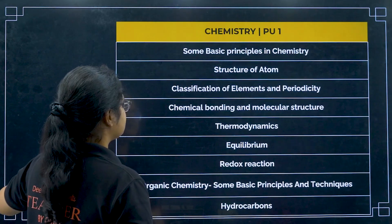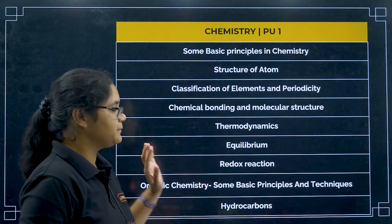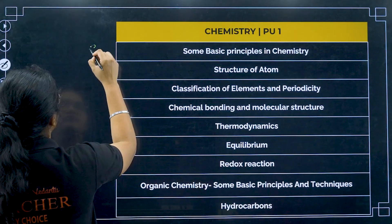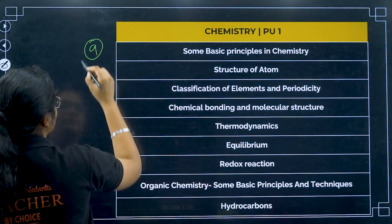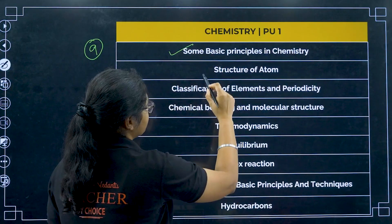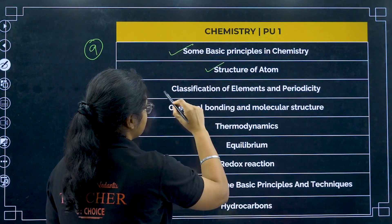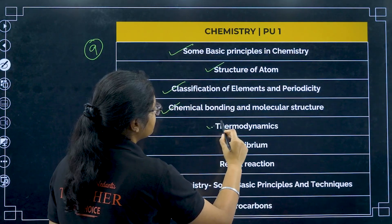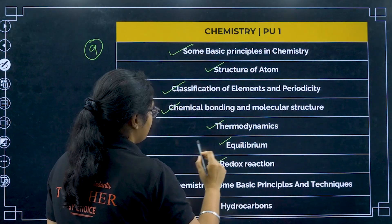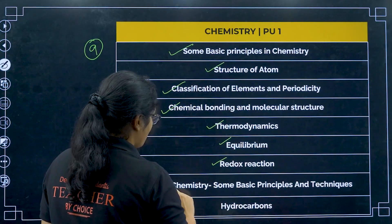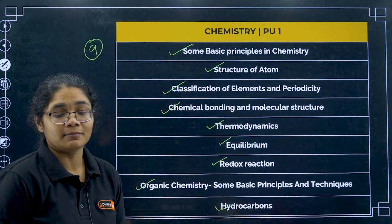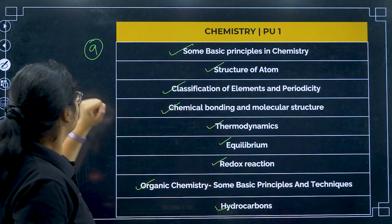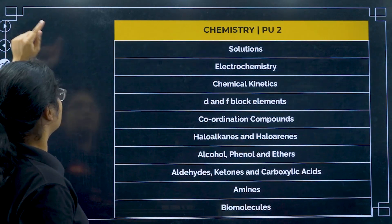First, let us see what chapters we have. In PU1, we have a total of nine chapters: some basic concepts of chemistry, structure of atom, classification of elements, chemical bonding, thermodynamics, equilibrium, redox reaction, organic chemistry, and hydrocarbons.